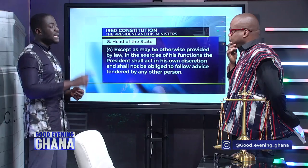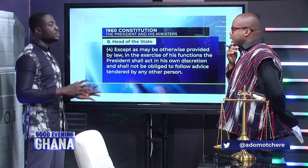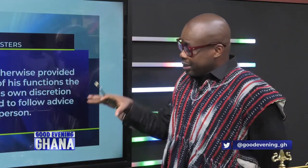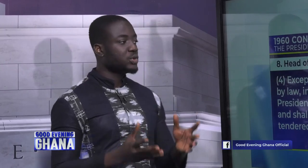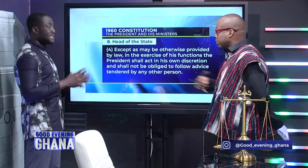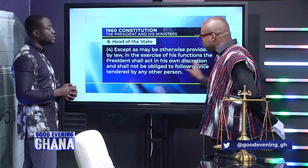Even in lawmaking under Article 96, once the president rejects a bill, he writes to parliament and attaches a memorandum. If parliament still feels strongly about the bill, they write back on a two-thirds majority vote and the president is forced to sign — he has no option. So the limitations on the president that we see in the 1992 Constitution, even those we think are not enough, were not available in the 1960 Constitution.